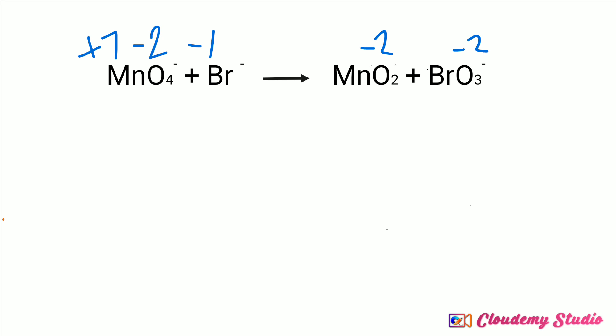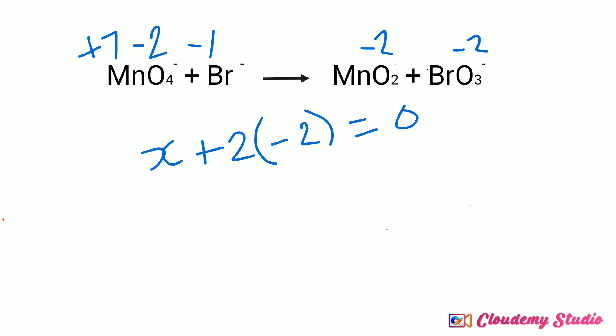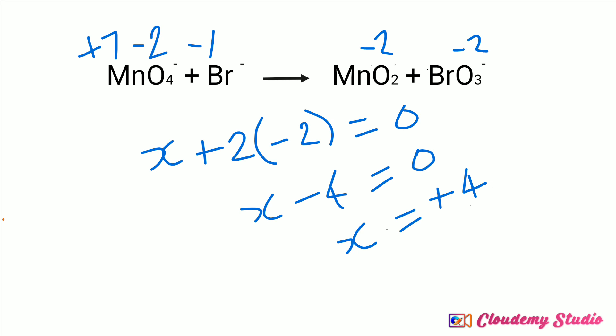For manganese dioxide, we calculate the oxidation number of manganese. Assuming it as x, with two oxygen atoms each at minus two: x + 2(−2) = 0, because manganese dioxide is a neutral compound and the sum of oxidation numbers equals zero. Simplifying, x − 4 = 0, therefore x = +4. The oxidation number of manganese in manganese dioxide is +4.